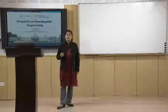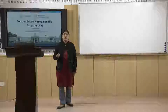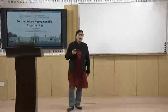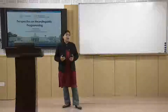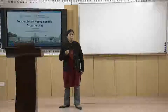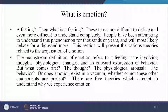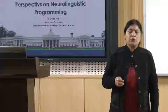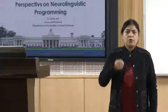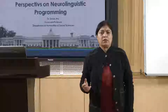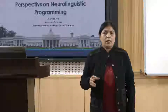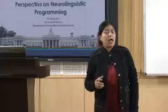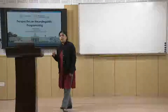This section will present the various theories related to the acquisition of emotion, because throughout neurolinguistic programming we have been discussing how to control the nerves, how to control emotion, how to be a good speaker, how to be a good anchor and how to get success in life. So it is very important to know emotion and its definition. The mainstream definition of emotion refers to a feeling, a state involving thoughts, physiological changes and an outward expression or behavior. But what comes first — the thought, the physiological arousal, the behavior, or does emotion exist in a vacuum whether or not these other components are present? For that we should know some of the important theories related to emotion.